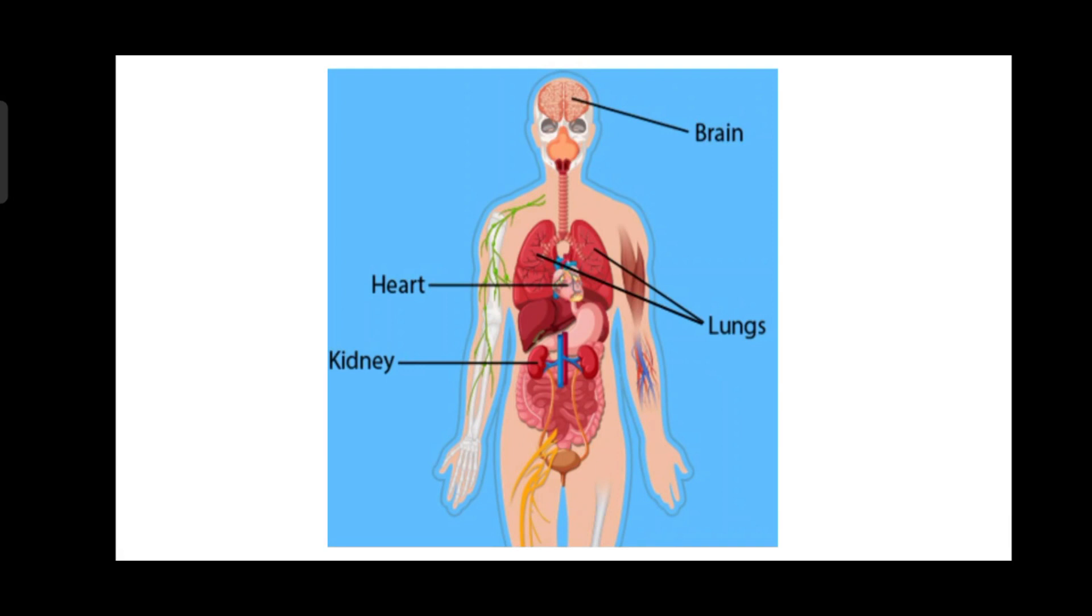The main vital organs of the human body are the brain, the heart, both lungs, and the kidneys. We know that vital organs are monitored by vital signs.